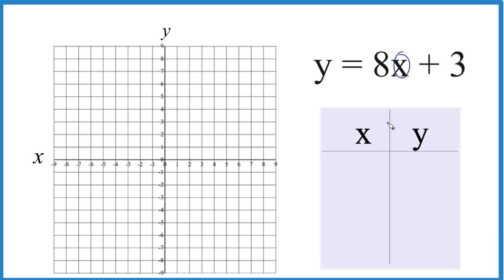I like to start out with 0, because 8 times 0, that's 0. 0 plus 3 is 3. So we start with 0x, we get 3y. And that's a point on the line y equals 8x plus 3.